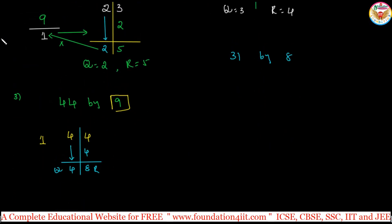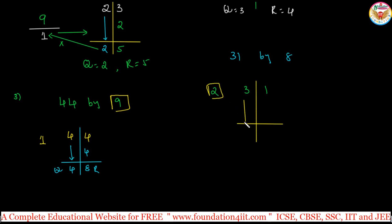Now let us take 31 divided by 8. The base is 10; 10 minus 8 is 2, so the difference is 2. Take 31, put a line — until you remember the method you can draw the line, then do it very fast. Take this 3 as it is down. 3 times 2 is 6. Then 1 plus 6 is 7. So 3 is the quotient and 7 is the remainder.